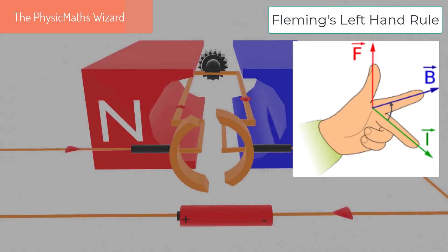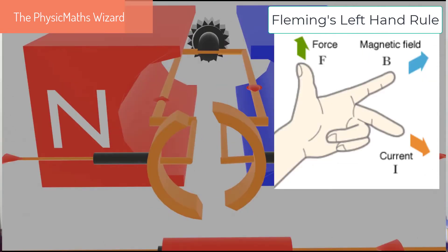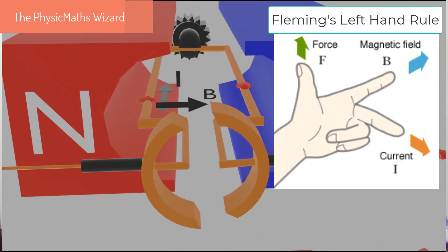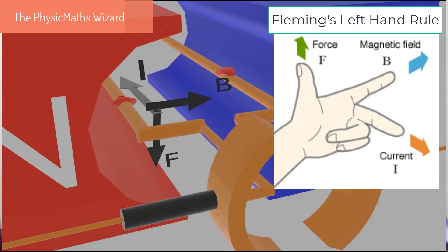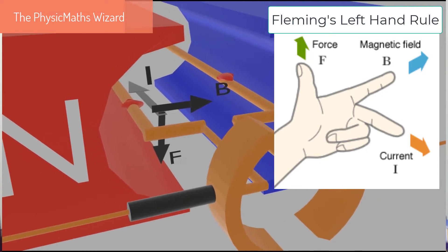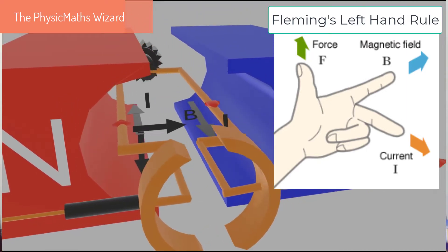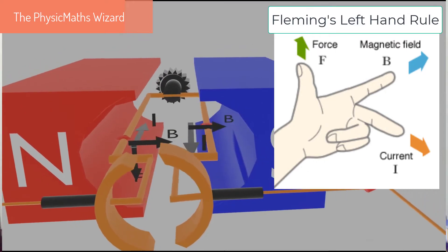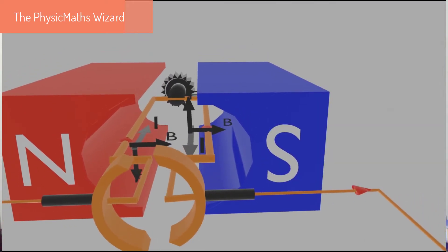According to Fleming's left-hand rule, if you arrange the forefinger, the middle finger and the thumb such that they are at right angles to each other, then let the forefinger point in the direction of the magnetic field, which always points from north to south pole of the magnet, and the middle finger point in the direction of current, then the thumb will give the direction of the force on the current-carrying conductor.